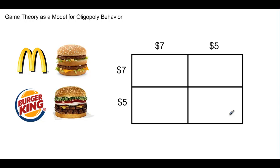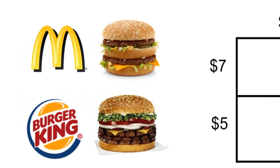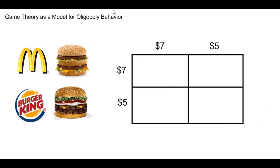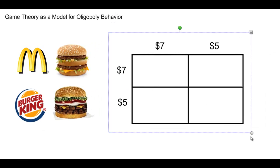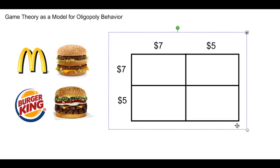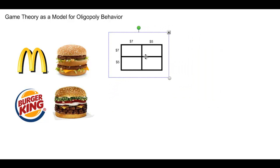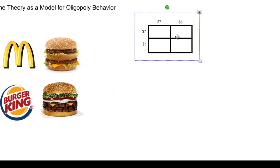Today we're going to be looking at two firms — McDonald's and Burger King — and the market for their two best-selling meals: the Big Mac by McDonald's and the Whopper by Burger King. Before we get into our game theory analysis, let's begin with a definition of oligopoly and an identification of some of the characteristics of an oligopolistic market.